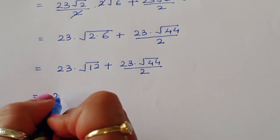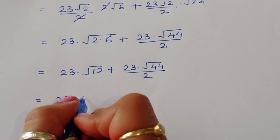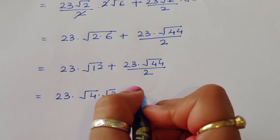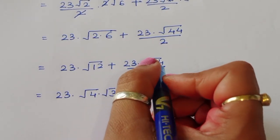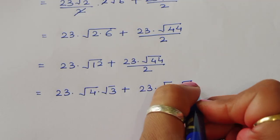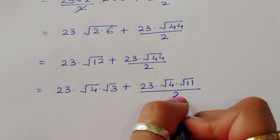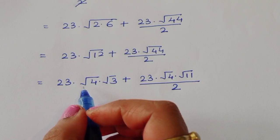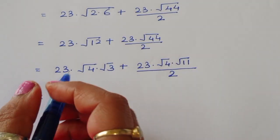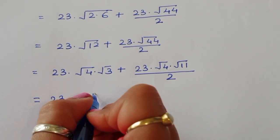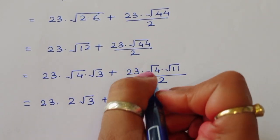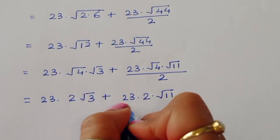Simplifying: √12 equals √(4×3) equals √4 times √3 equals 2√3. And √44 equals √(4×11) equals √4 times √11 equals 2√11. So we get 23 times 2√3 plus 23 times 2√11, divided by 2. The 2 cancels, giving 23 times 2√3 plus 23 times √11.